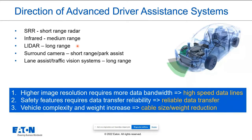The main drivers are: sensors and cameras with higher image resolution providing more visibility and safety, requiring high-speed data bandwidth; reliable data transfer for safety features; and cable size and weight reduction while maintaining reliability. When you try to improve speed and reduce cable size, more noise intrusion comes into play, making noise filtering and immunity improvement critical to make these newer systems work.